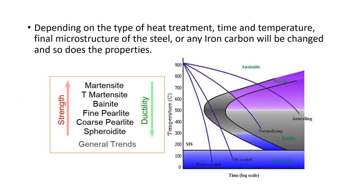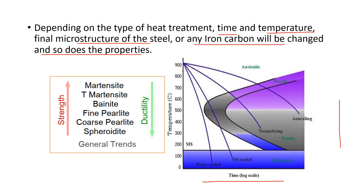Depending on the type of heat treatment, time, and temperature, the final microstructure of the steel or iron-carbide alloy will be changed, and so will the properties. According to the type of heat treatment — changing the time and temperature — the final microstructure is formed. In this figure, different regions are defined with respect to logarithm of time on the horizontal axis and temperature on the vertical axis, with S-curves plotted for different types of heat treatment.